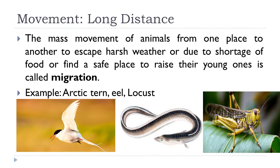Sometimes it is difficult for animals to find food due to adverse weather conditions. To escape harsh weather, animals move large distances in groups. This mass movement of animals from one place to another — to escape harsh weather, due to shortage of food, or to find a safe place — is called migration. For example, the arctic tern is the champion amongst migratory animals. It travels a distance of 17,000 kilometers from the Arctic to the Antarctic during the winter season.